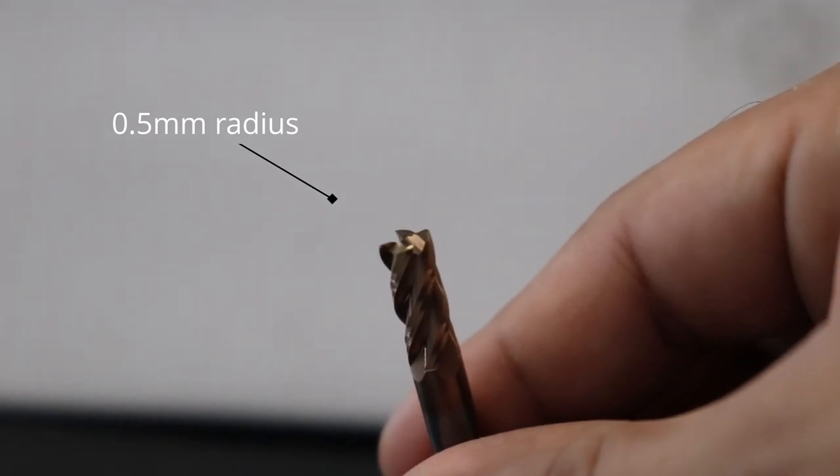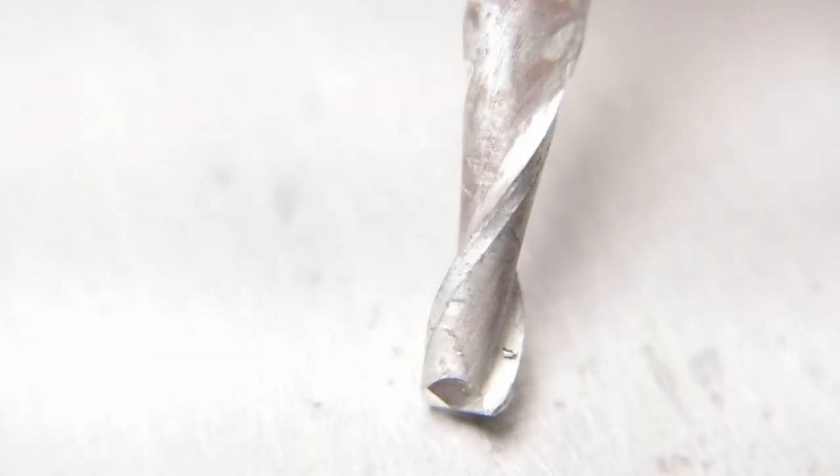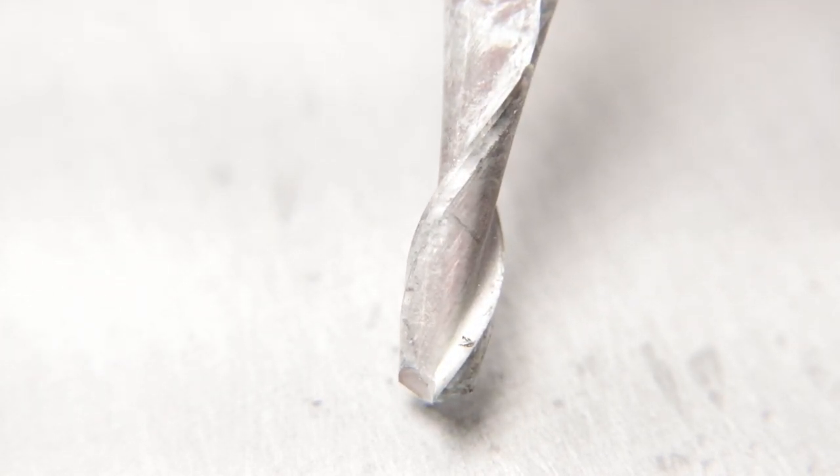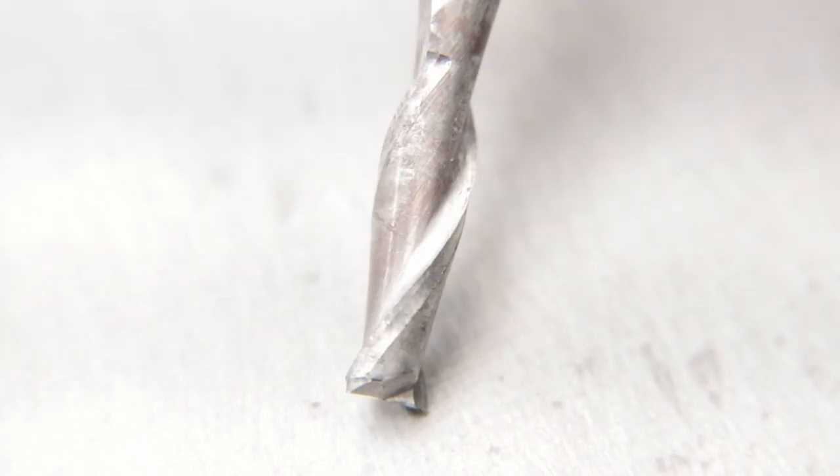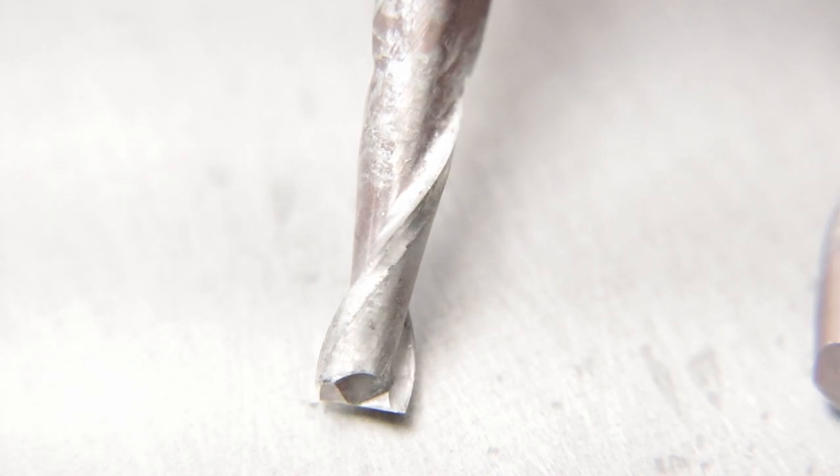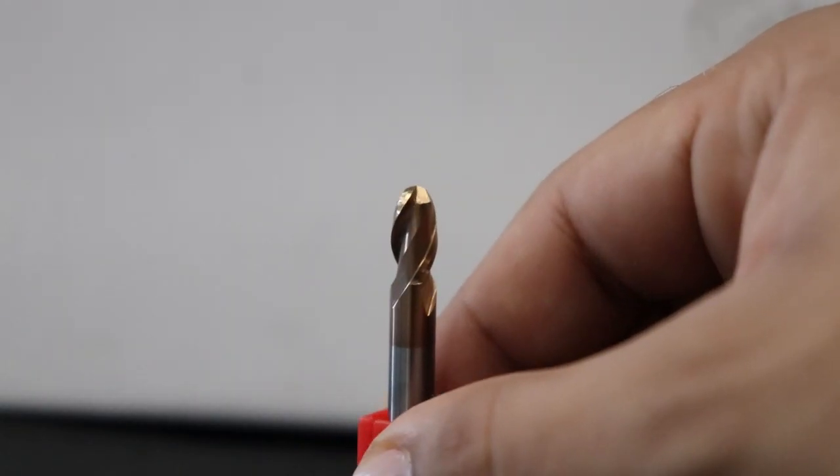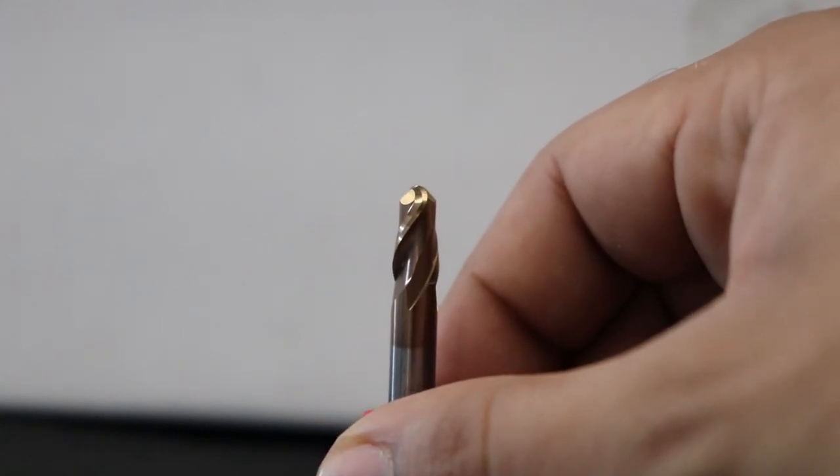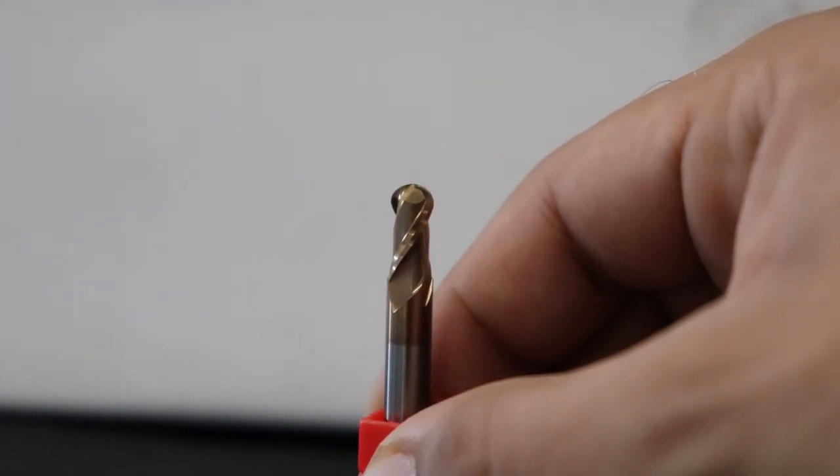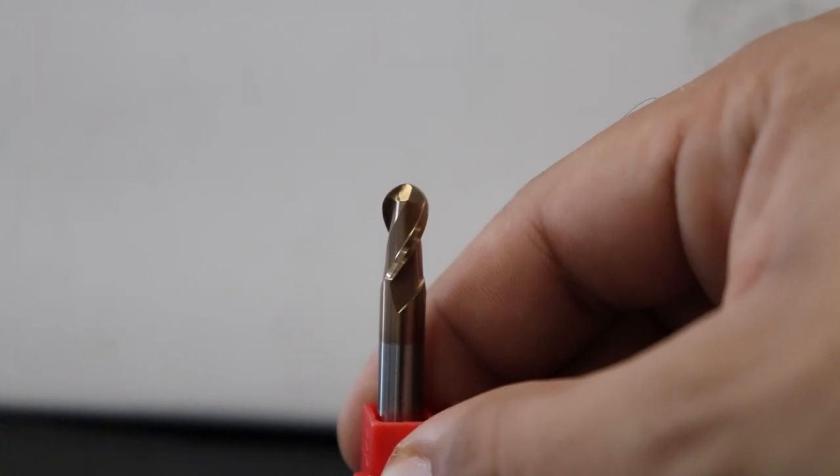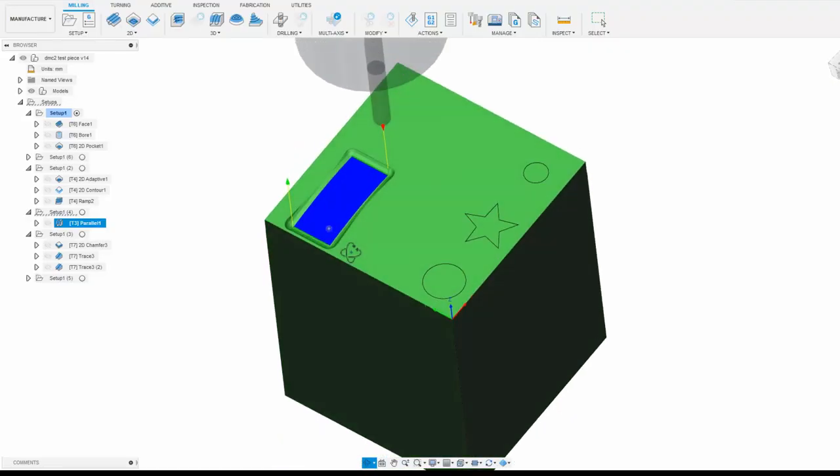They generally cost a small amount more than regular square endmills, but are worth the extra cost if you find you're chipping the tips off of your square endmills frequently. The next type of endmill you'll likely use is a ball endmill. You can think of this as a radius square endmill, except the radius completely covers the bottom face, so that you have a perfect semicircle.